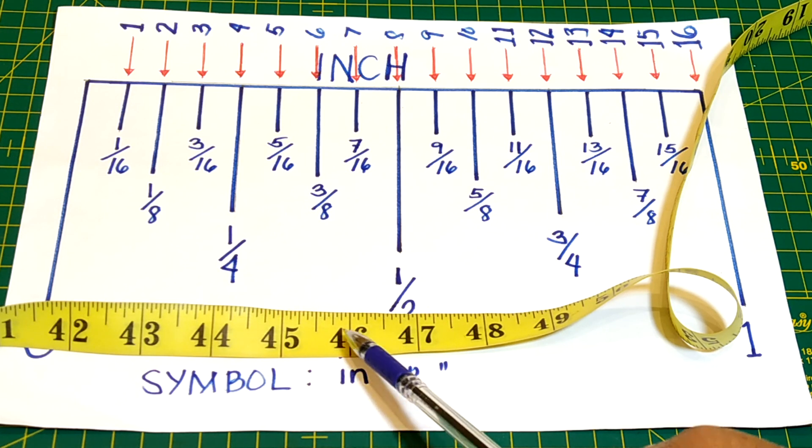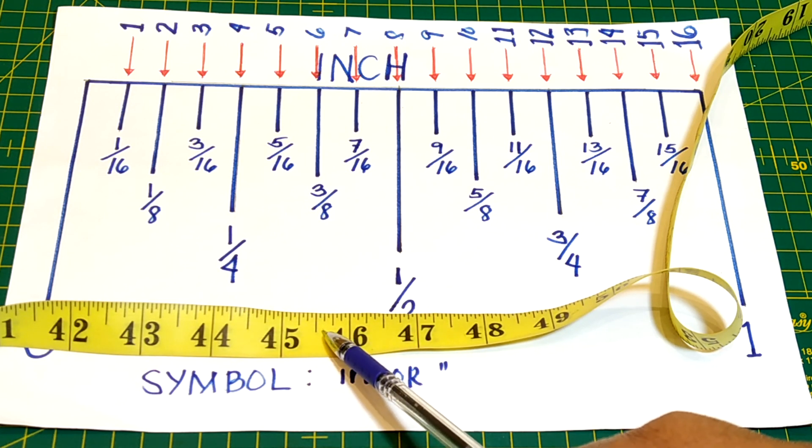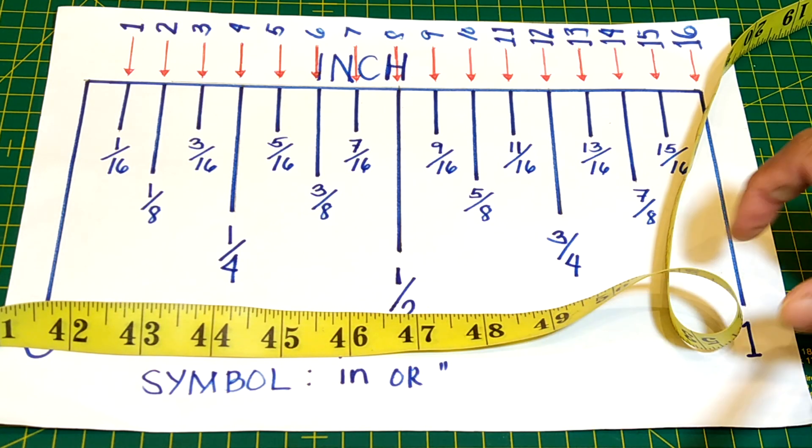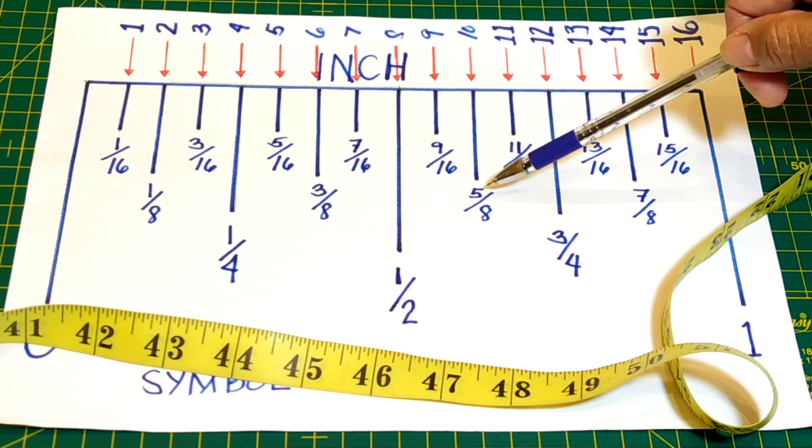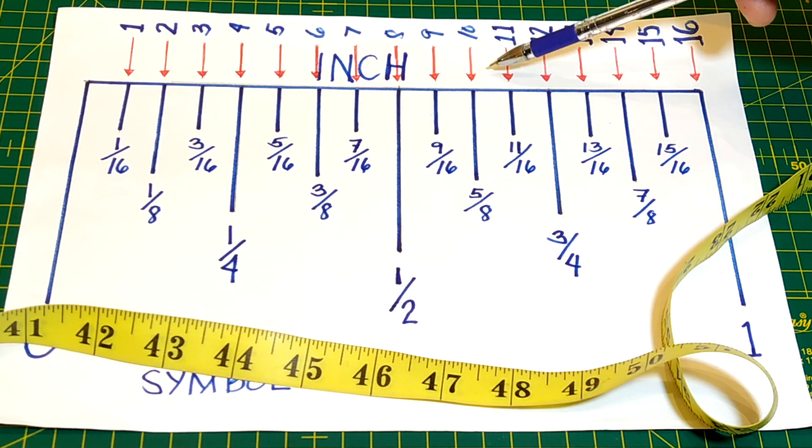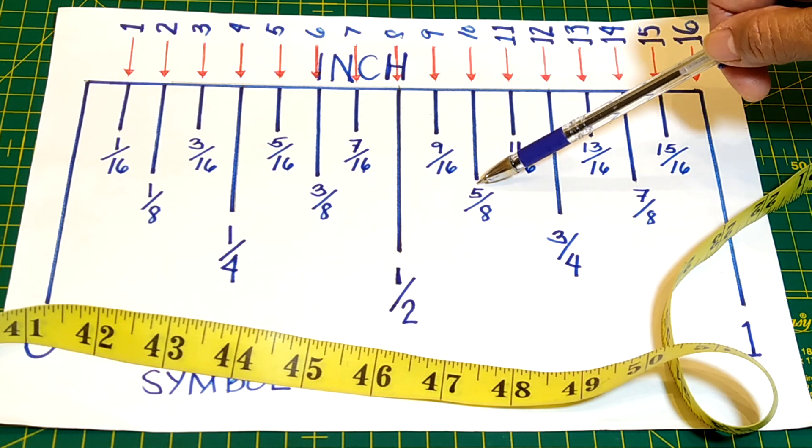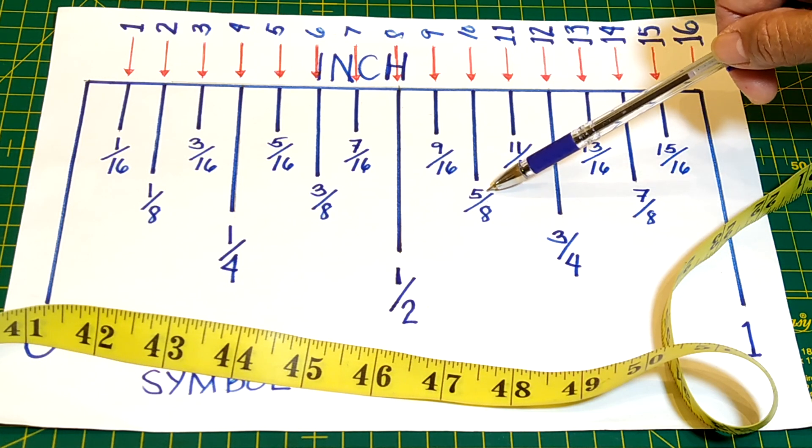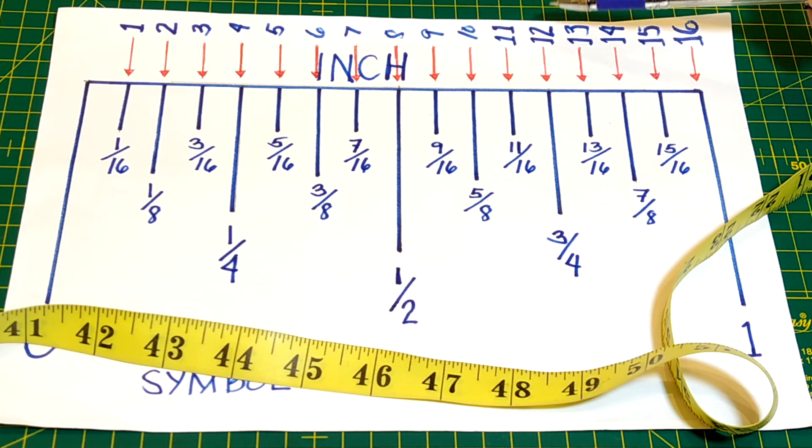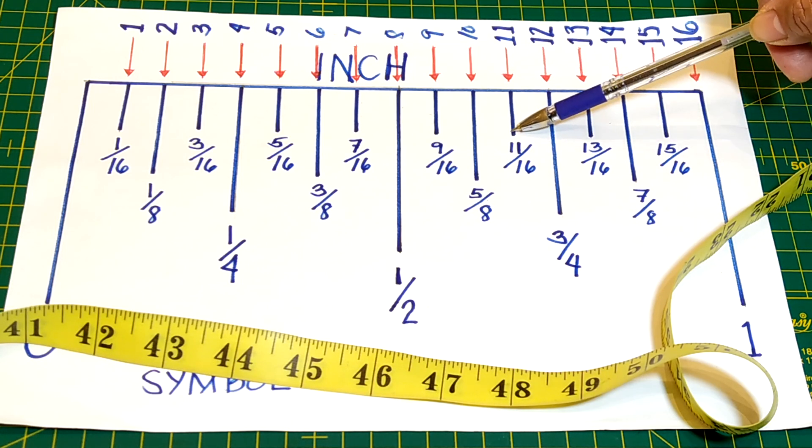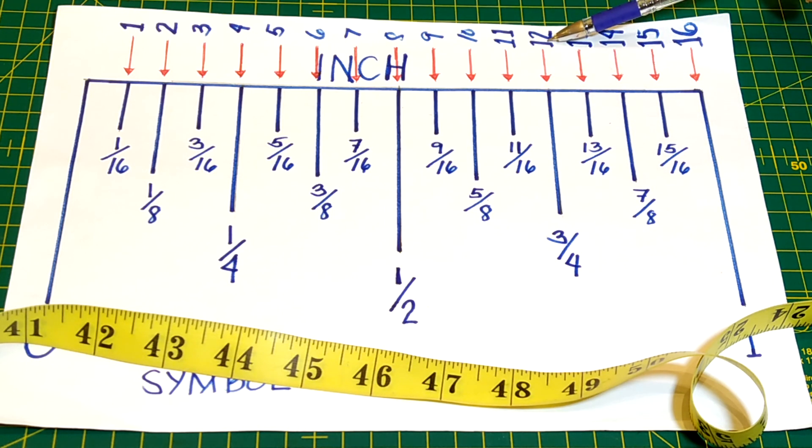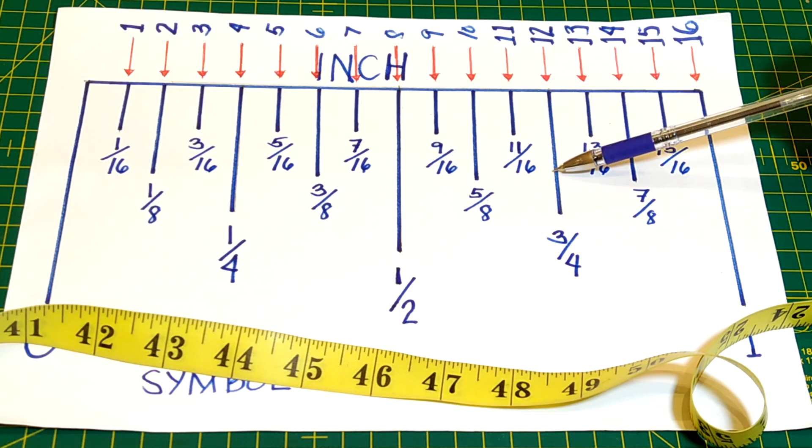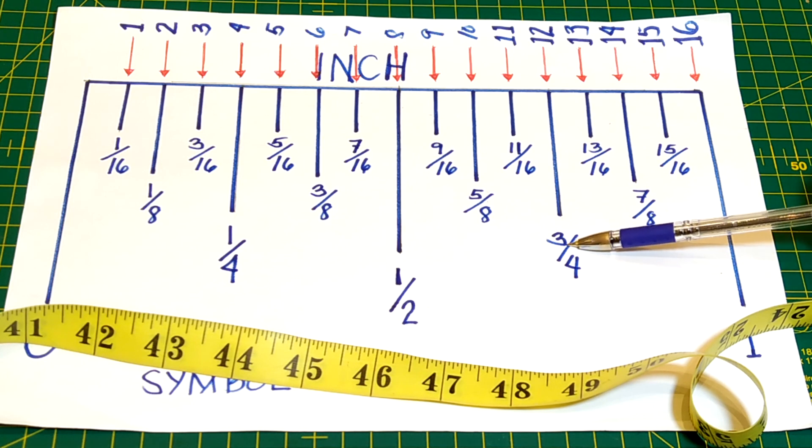The ninth line is 9/16, and the tenth line is 5/8 or 10/16. The eleventh line is 11/16, and then the twelfth line is 12/16 or 3/4.